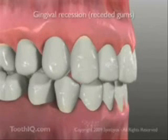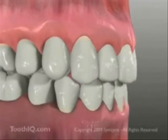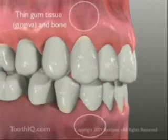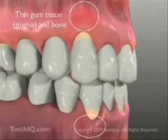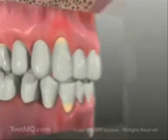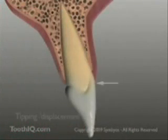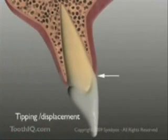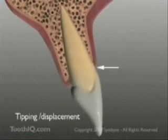Gingival recession, or receded gums, can be a significant dental problem. It typically happens on teeth which have thin overlying soft tissue and or bone, or are unfavorably located in the dental arch.